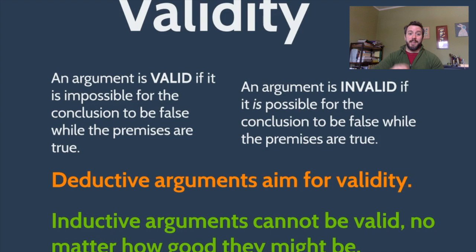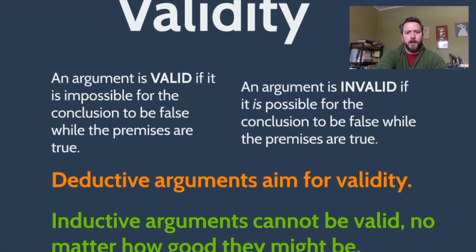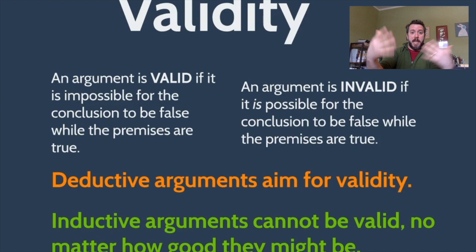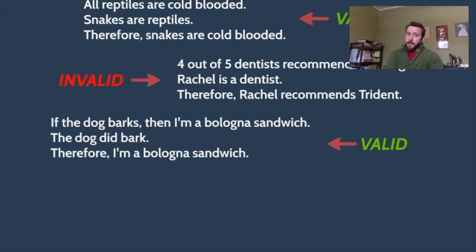We'll talk about that more when we look deeper at inductive arguments. Let's look at some examples to see if we can figure out whether an argument is valid or invalid. Consider: All reptiles are cold-blooded. Snakes are reptiles. Therefore, snakes are cold-blooded. We've seen this structure before. If all reptiles are cold-blooded and snakes are reptiles, then snakes have to be cold-blooded. That argument is valid — there's no way for the premises to be true without the conclusion also being true.